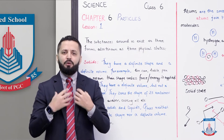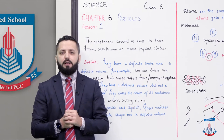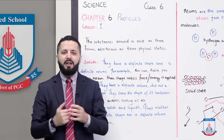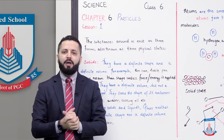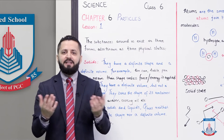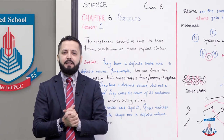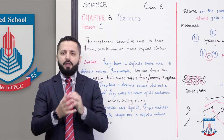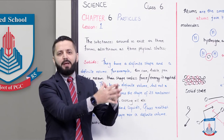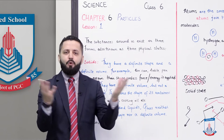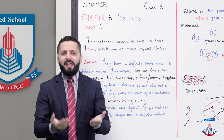Gases are the opposite of both those states — they do not have a definite shape and they do not have a definite volume. For example, air is found freely all around us. No one can say that air has a definite volume or a definite shape — gases roam around freely. The best example, as I mentioned, is air itself.